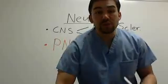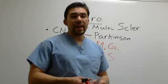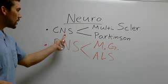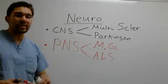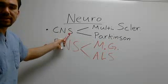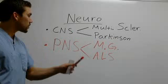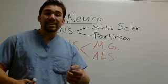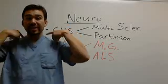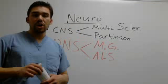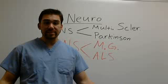In neurological disorders, we have four big ones. In your body, you have a central nervous system and a peripheral nervous system. Your central nervous system is really just your brain and your spinal cord, while your peripheral nervous system is everything outside of the brain and spinal cord.